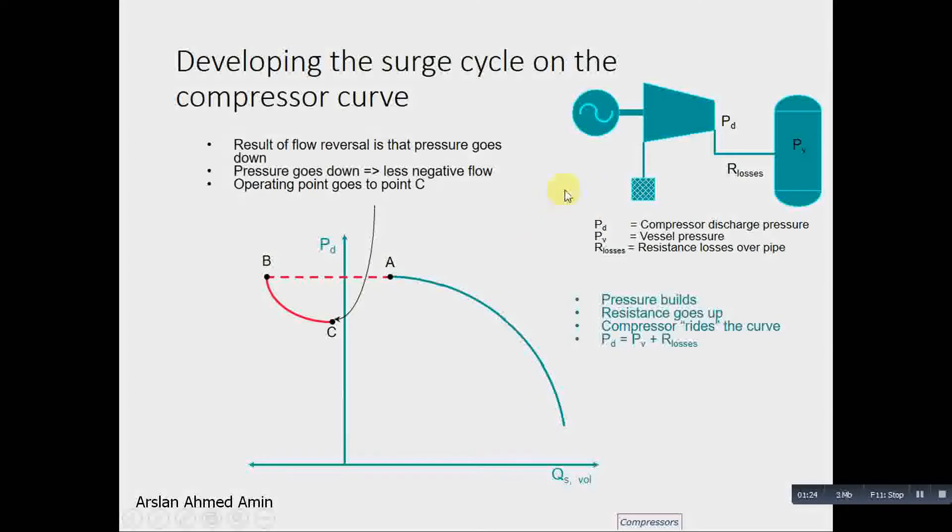But this is a momentary condition. The result of flow reversal is that pressure goes down with negative flow, and the operating point goes to point C. In the surge cycle, we see that the flow starts and the flow of the gas is between positive and negative.